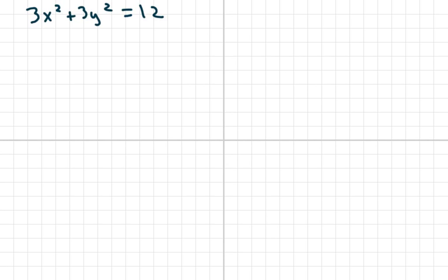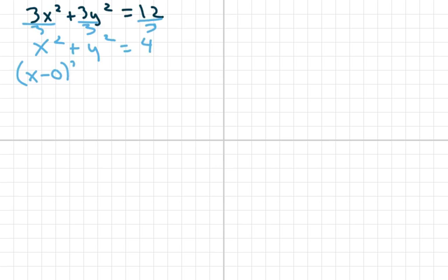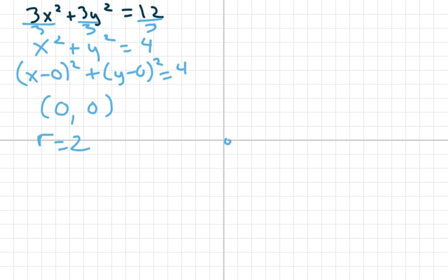The last one is very simple but a lot of students have a problem with it. If you see something like 3x squared plus 3y squared equals 12, all you do is divide each piece by 3 and get x squared plus y squared equals 4. This is like x minus 0 squared plus y minus 0 squared equals 4, so the center is 0, 0 and r is 2. Go up 2, over 2, down 2, to the left 2, and draw the circle — that's a circle at the origin. Next we'll go over ellipses.